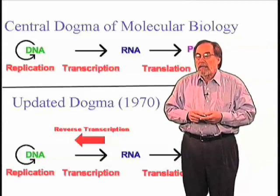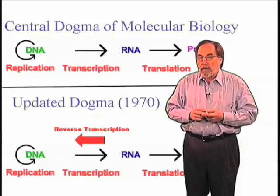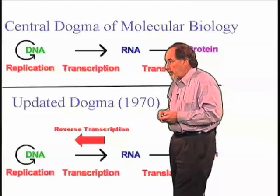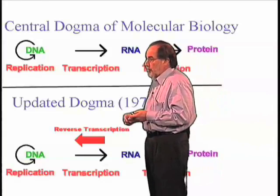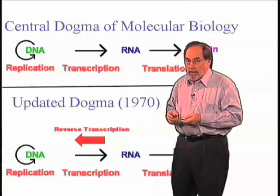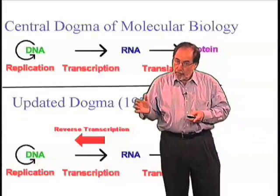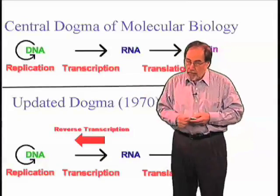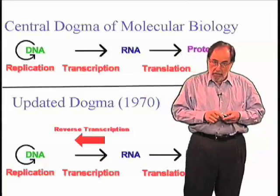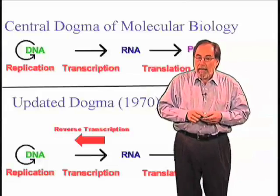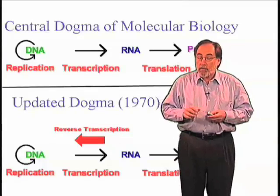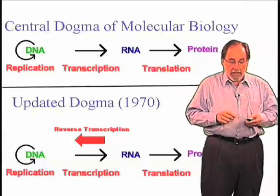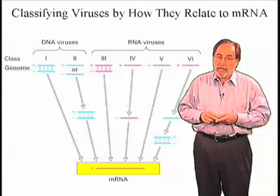Proteins are the workhorses of viruses as they are of cells. In 1970, I had the good fortune to make an observation that added a piece to the central dogma, and that is reverse transcription. Reverse transcription is the ability to reverse the ordinary flow of information so that RNA gives rise to DNA. That was something thought to be particular to viruses, but as we will discuss, it has much wider implications than that.